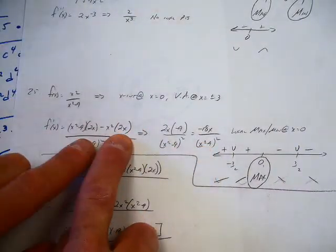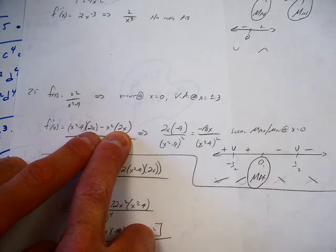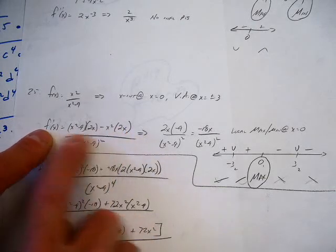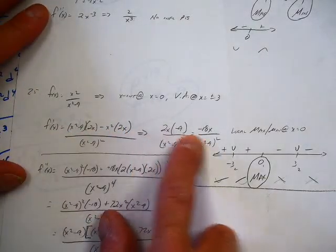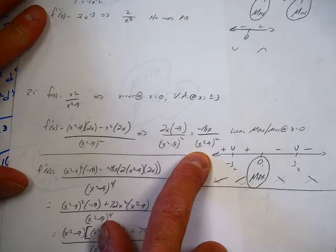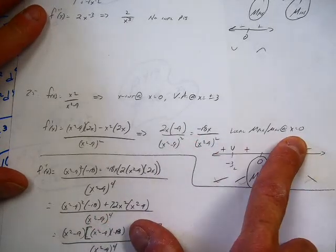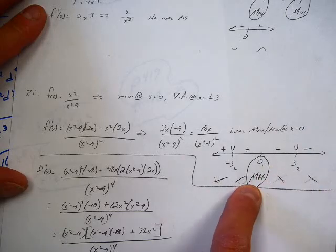First derivative - I went ahead and factored out a 2x, went up with this. It tells me I've got a local maximum or a minimum at zero. Do my test strip, it's a maximum.